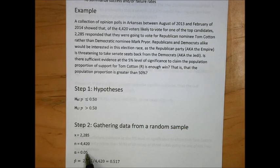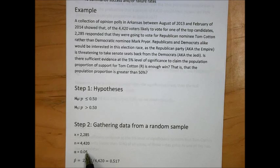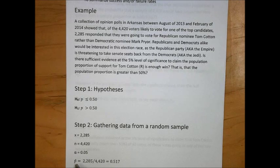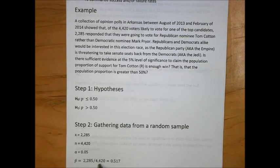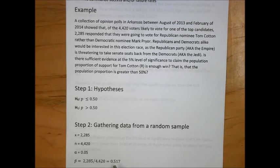The level of significance for this test is 5%. The sample proportion is calculated from the X and the N, as you might recall from confidence intervals. In this case, we see that in the sample of 4,420 likely voters, 51.7% or a proportion of 0.517 planned on voting for Republican candidate Tom Cotton.